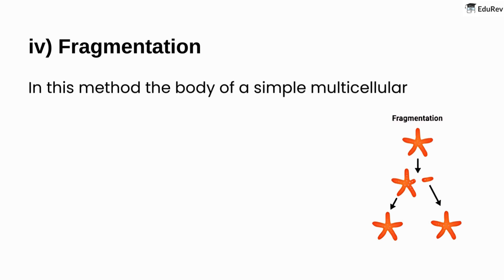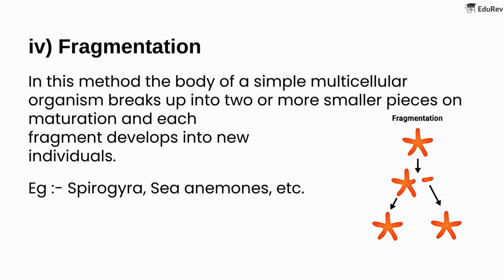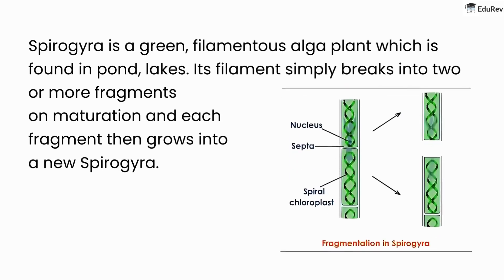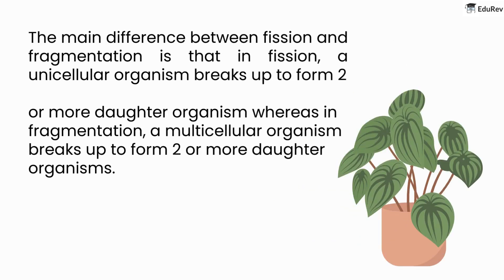Fragmentation: in this method, the body of a simple multicellular organism breaks up into two or more smaller pieces on maturation, and each fragment develops into a new individual. Examples include Spirogyra, sea anemones, etc. Spirogyra is a green, filamentous alga found in ponds and lakes. Its filament simply breaks into two or more fragments on maturation and each fragment grows into a new Spirogyra. The main difference between fission and fragmentation is that in fission, a unicellular organism breaks up to form daughter organisms, whereas in fragmentation, a multicellular organism breaks up to form daughter organisms.